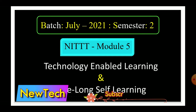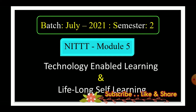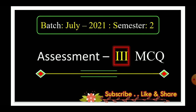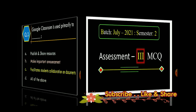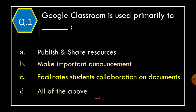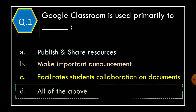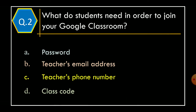Technology Enabled Learning and Lifelong Self-Learning Assessment 3 MCQs. Question 1: Google Classroom is used primarily to — Option A: Publish and Share Resources, Option B: Make Important Announcement, Option C: Facilitates Students' Collaboration on Documents, Option D: All of the Above. And correct option is Option D: All of the Above.